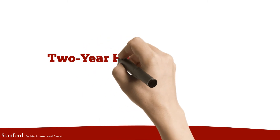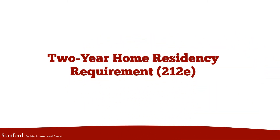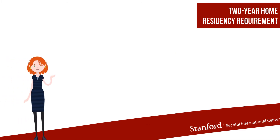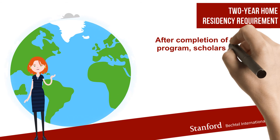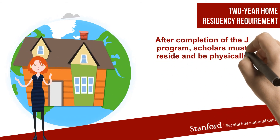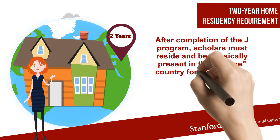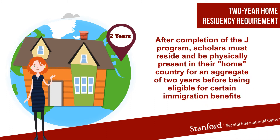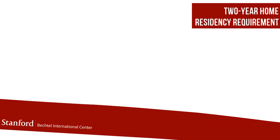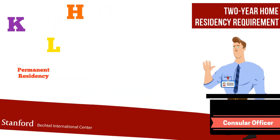First, let's talk about the 2-year home residency requirement, otherwise known as the 212(e). After completing the J program, scholars subject to the 2-year home residency requirement must reside and be physically present in their home country for an aggregate of 2 years before being eligible for certain immigration benefits. These benefits are changing status to permanent residency, H, K, or L visa classifications.